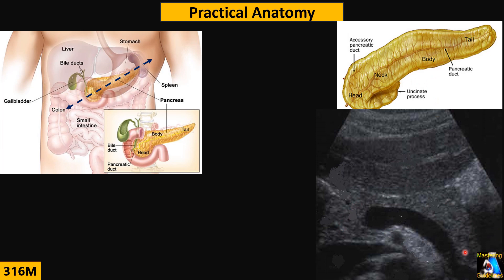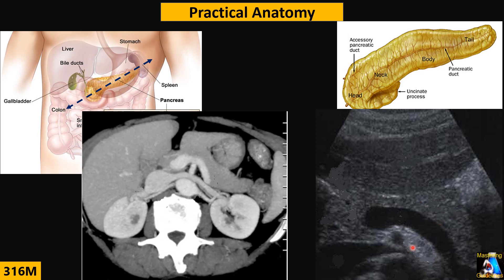You may ask: the pancreas looks straight, so why does it appear as a concave shape in ultrasound? Based on anatomy, the pancreas lies over the aorta and vertebra, so it takes the curved shape of the aorta and vertebra region, and also over the kidneys. That is why we see the long axis of the pancreas as a concave shape.